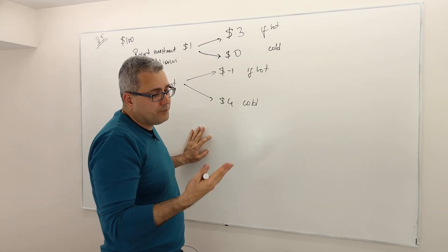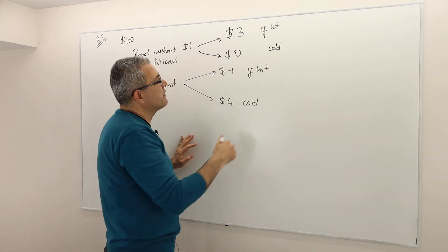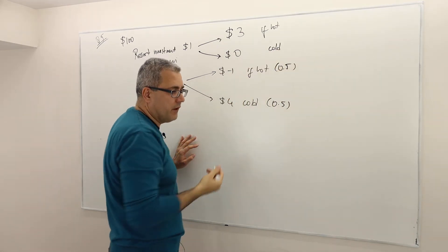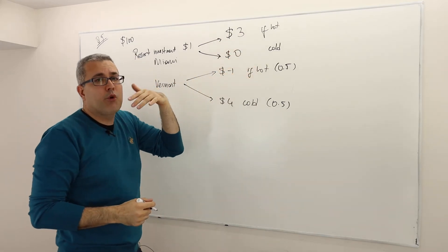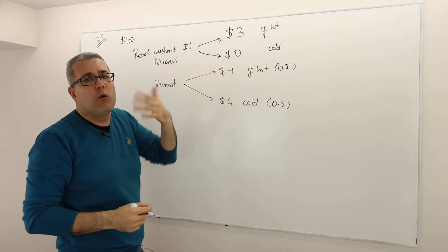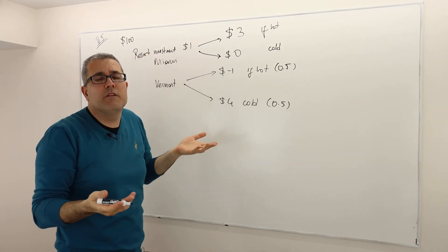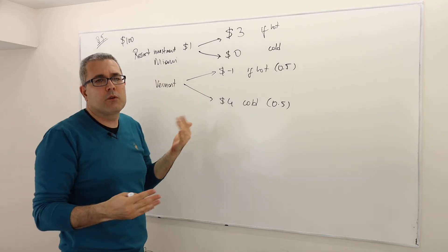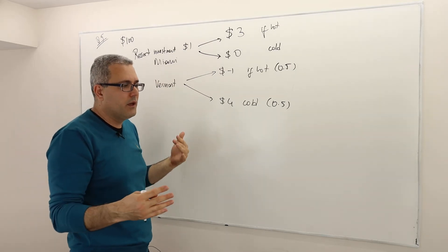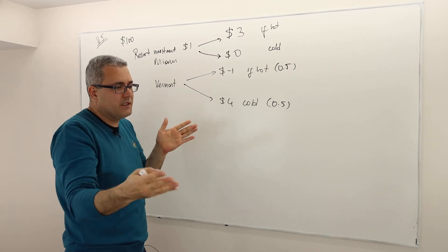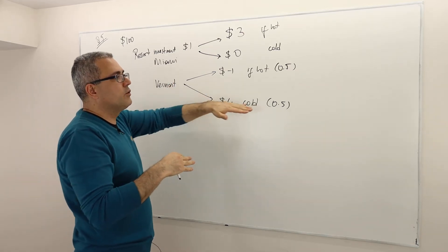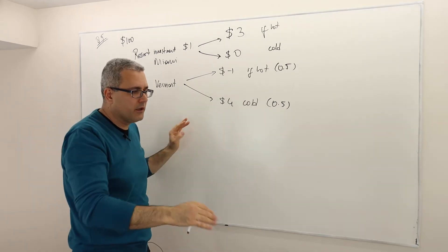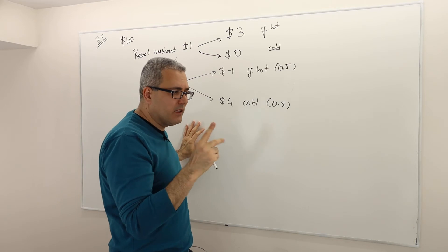The probability that the year is cold is 0.5, and therefore hot is also 0.5. Importantly, the weather is independent of your investment — the weather won't be cold because you invested in Miami or Vermont. Your investment depends on the weather, not the other way around.